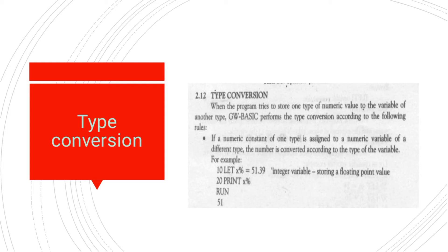When the program tries to store one type of numeric variable into a variable of another numeric type, QBasic performs the type conversion according to the following rules. We will now read those rules — according to which rules QBasic changes the variables. The first rule is: if a numeric constant of one type is assigned to a numeric variable of a different type, meaning we took a numeric constant and assigned it to a variable whose type is different.